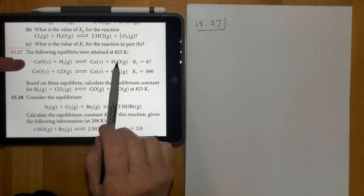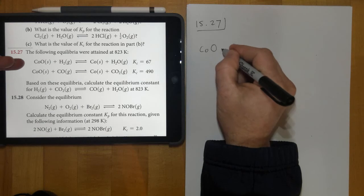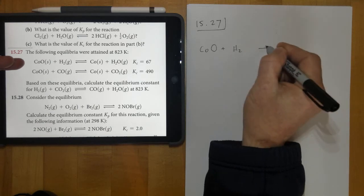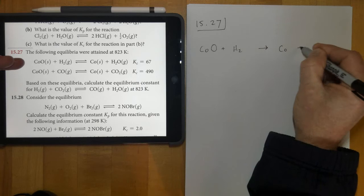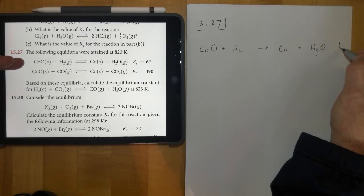As a matter of fact, let's show how that's done by writing the first equation down here: COO plus H2, an arrow, and then we get CO and we get H2O. And its K is 67.